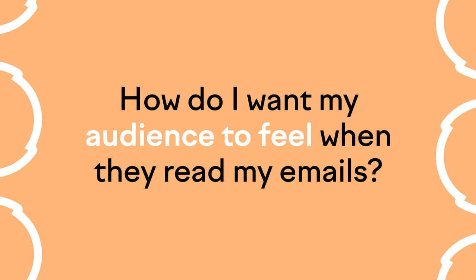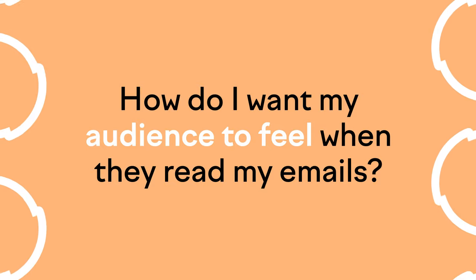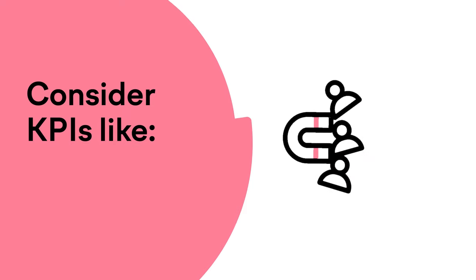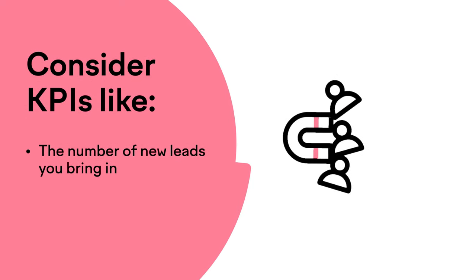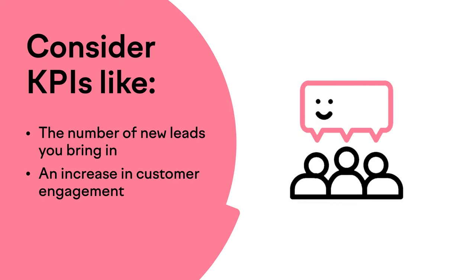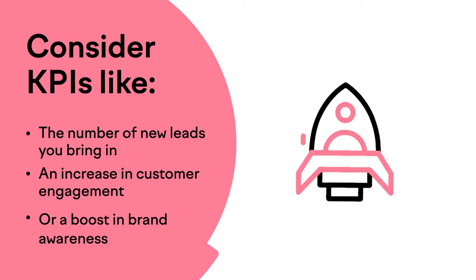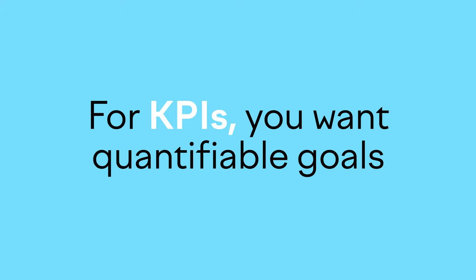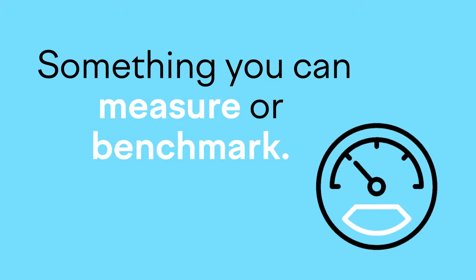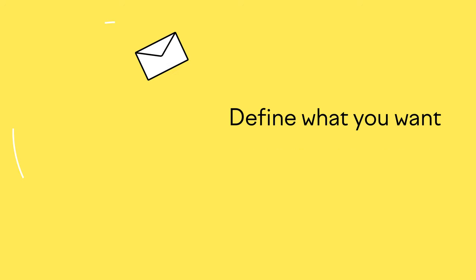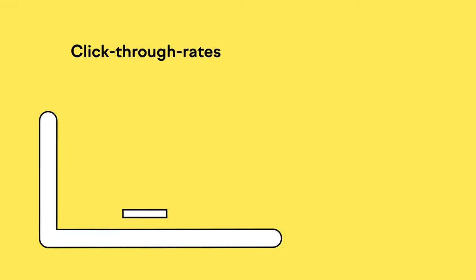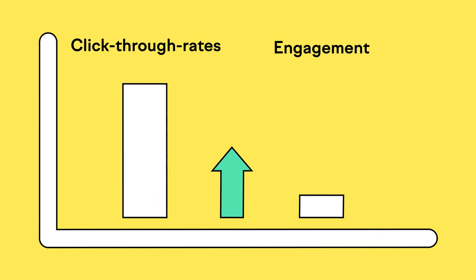How do I want my audience to feel when they read my emails? Do I want to be known for my emails? Consider KPIs like the number of new leads you bring in, an increase in customer engagement, or a boost in brand awareness. For KPIs, you want quantifiable goals — something you can measure or benchmark. Spend some time defining what you want your readers to get out of your marketing emails so you can better cater to their needs. This can help increase click-through rates and engagement.